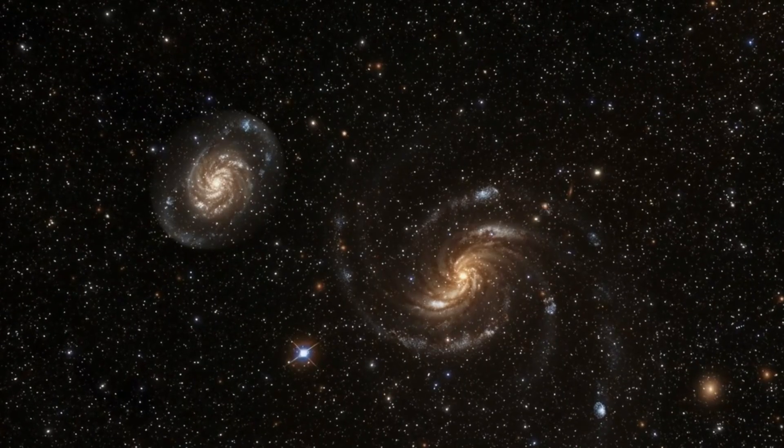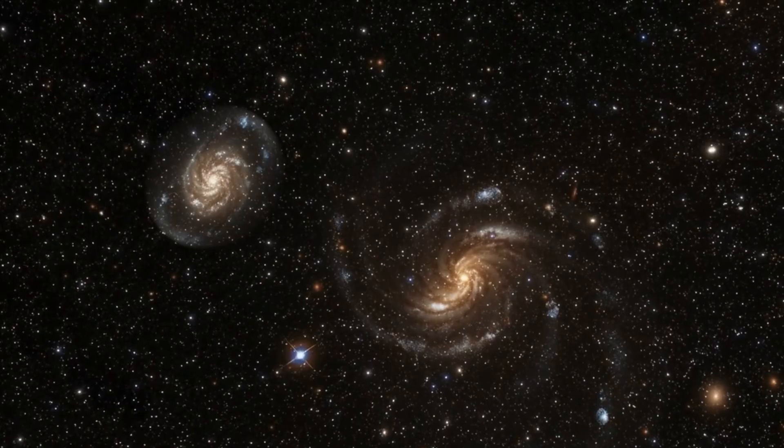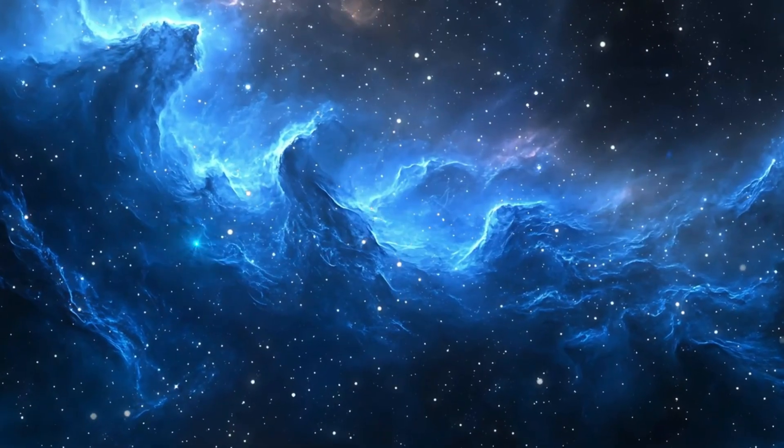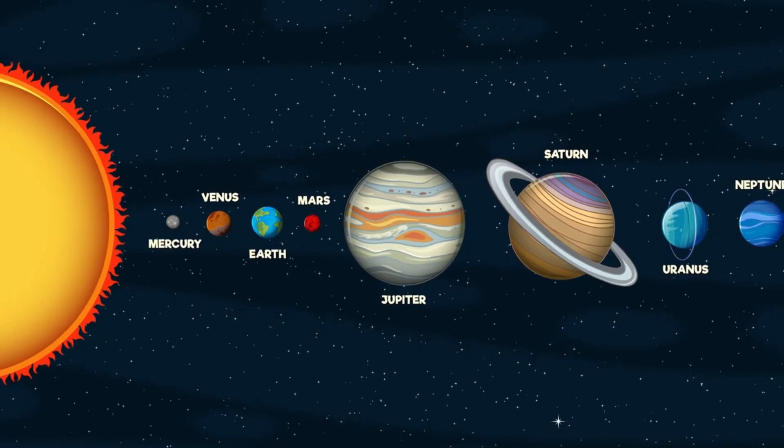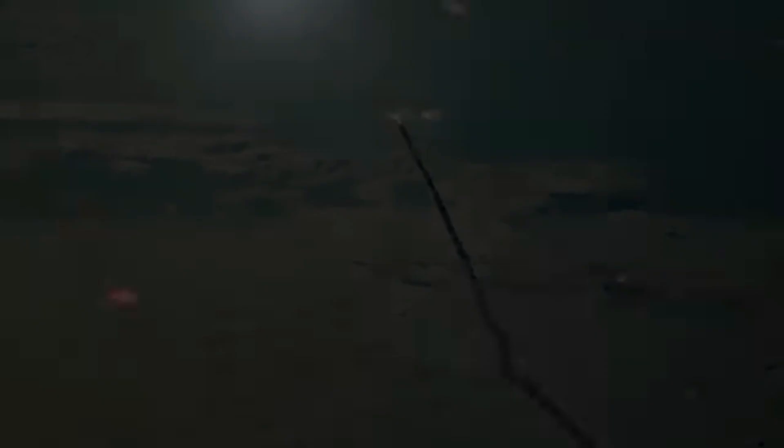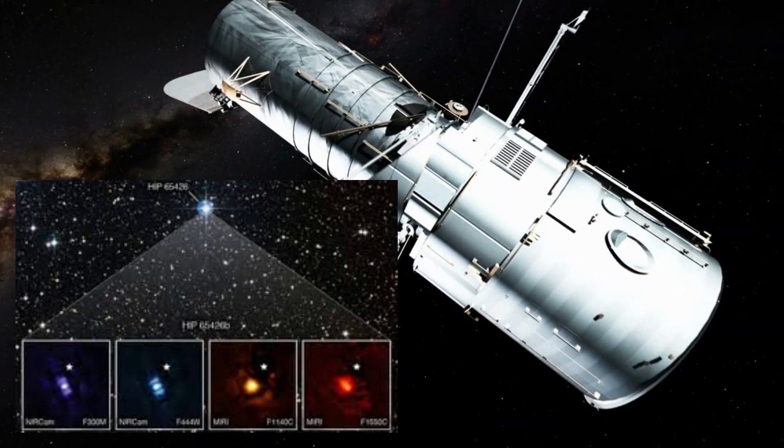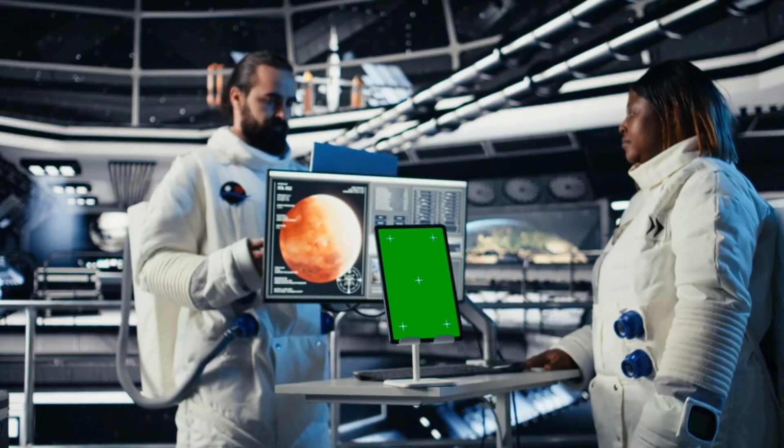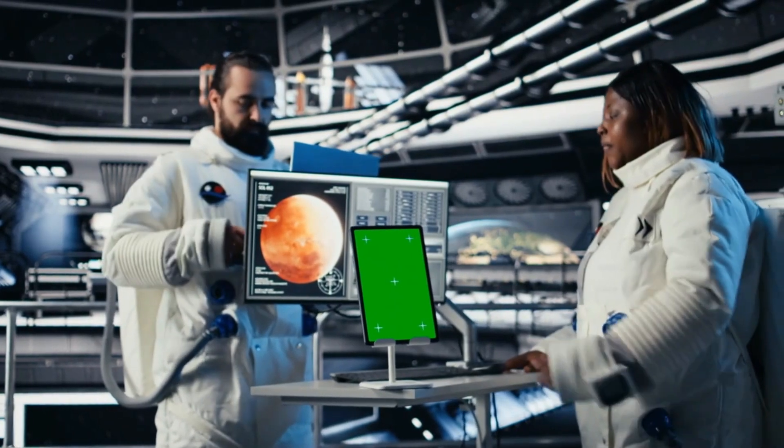How in the world did these massive galaxies form so fast and shine so brightly, so early in the universe's history? That's the big question that's been rattling the scientific community ever since the James Webb Space Telescope started sending back its mind-blowing images.